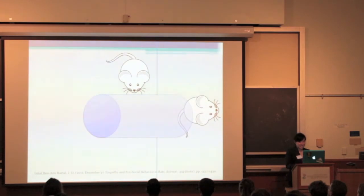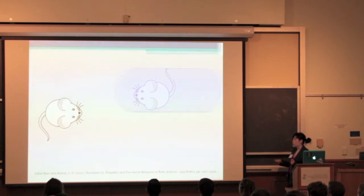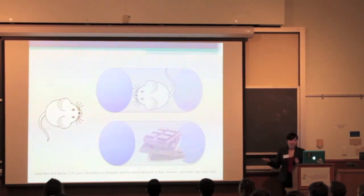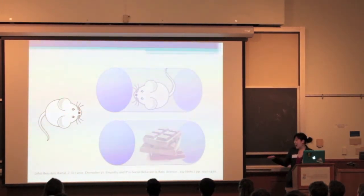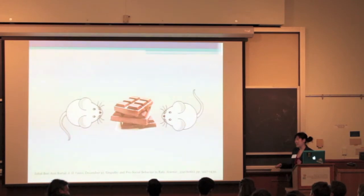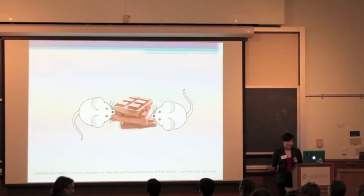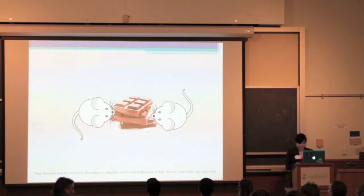When researchers put the trapped rat in competition with some trapped chocolate, they found, yeah, this is highly desirable, highly desirable for rats and humans. They found that the dominant rat would first free its cage mate, and then they would release and share the chocolate. Which is, yeah, that's definitely like an aww moment. Go ahead, enjoy this graphic. It was quite fun to make. And I ate some chocolate while looking at it. I was inspired.